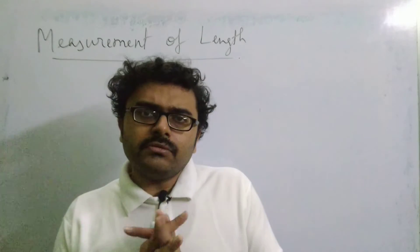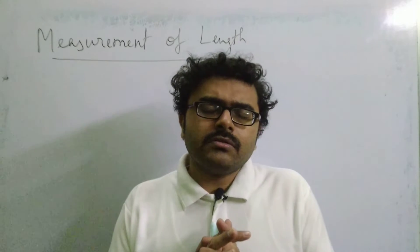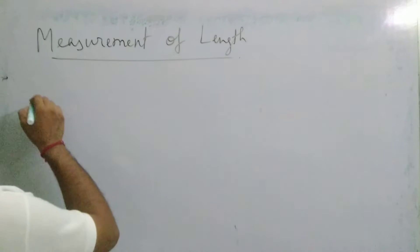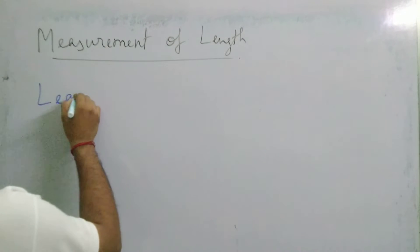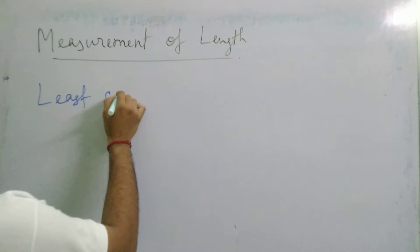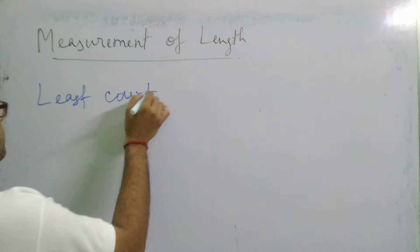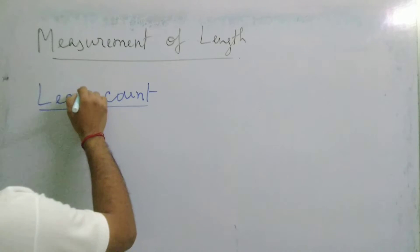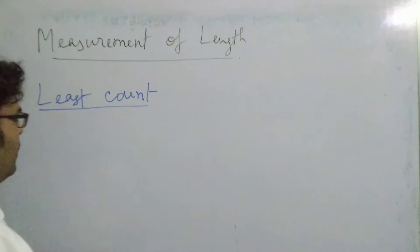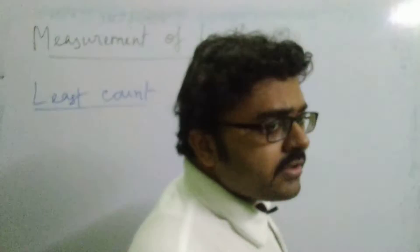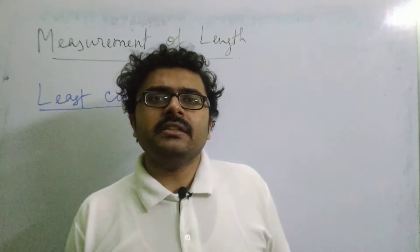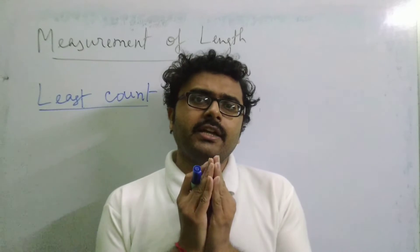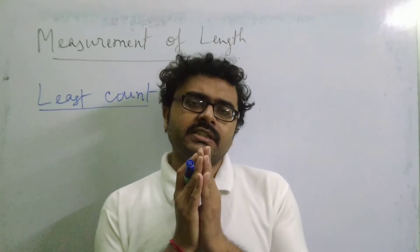Before going into details of measuring small lengths, we will be discussing one term which is called the least count. Now, what is least count? This is a very important concept, so please try to understand very carefully. In very simple language, you can say: the smallest measurement that a measuring instrument can measure is called its least count.